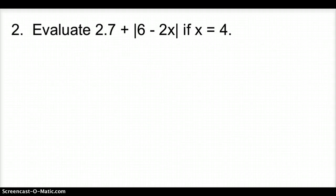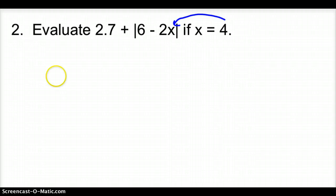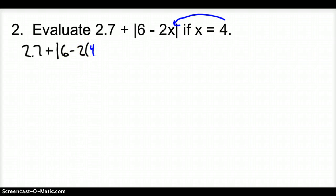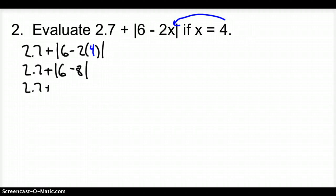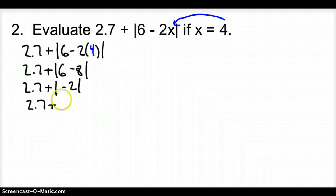Let's try one more — number 2. If x equals 4, we plug 4 into x. So now we have 2.7 plus — and again, that's an absolute value, not a 1 — minus 2 times 4, close the parenthesis, then add the absolute value. Inside the absolute value, multiplication comes first, so we subtract 8. Then it's 2.7 plus the absolute value of negative 2. The absolute value of a negative is positive, so it's 2.7 plus 2, which gives us 4.7.